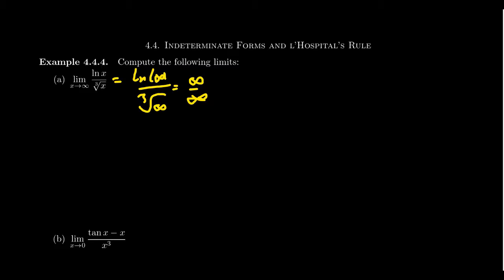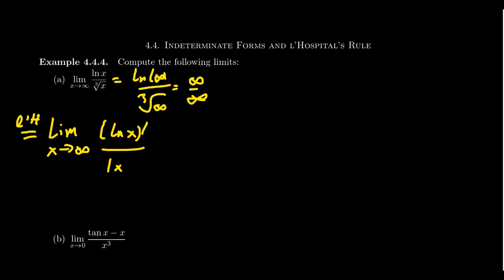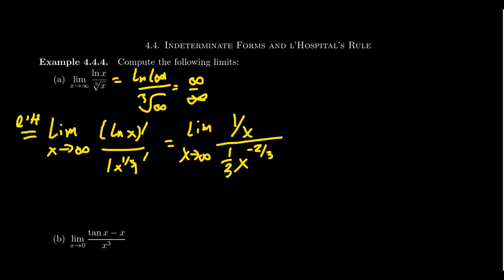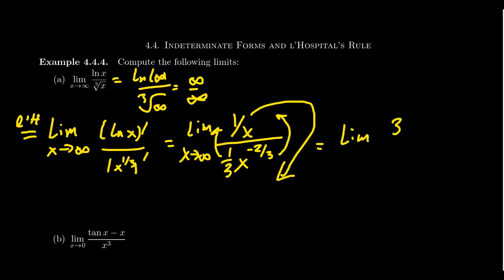Since we have the form infinity over infinity, we can apply L'Hôpital's rule. We still take the limit as x approaches infinity, but now we take the derivative of the natural log divided by the derivative of x to the one-third power. The derivative of the natural log is one over x. The derivative of x to the one-third by the power rule is one-third x to the negative two-thirds power. After simplifying — bringing x to the negative two-thirds above and the division by three — we get three times x to the two-thirds power over x.